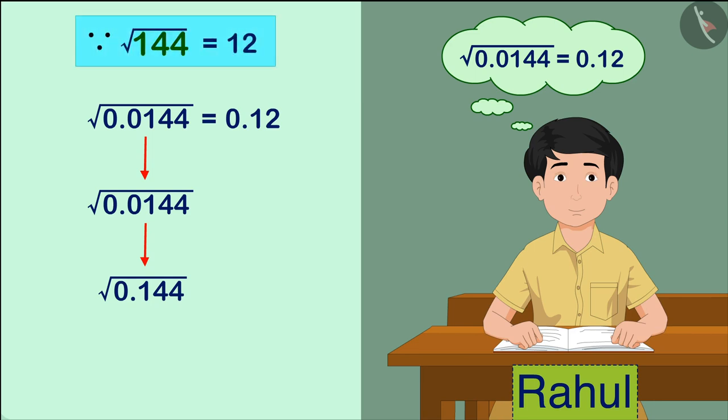The square root of the number 144 is 12. So, while finding the square root of this number, Rahul wrote the square root of 144 and then put a decimal before 12, which gave him 0.12 as the answer. This answer is correct, but the method of solving it is incorrect.